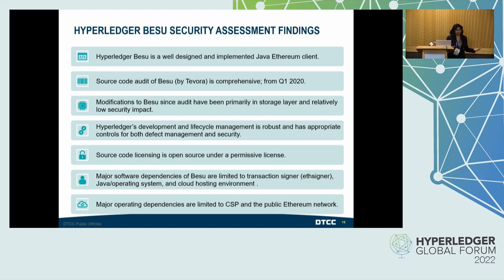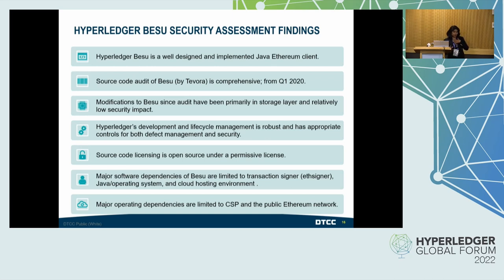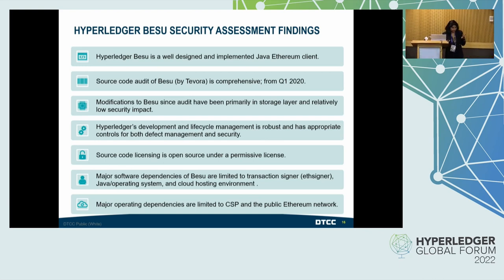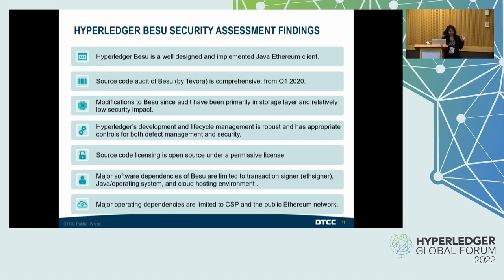Walking through the Hyperledger Besu security assessment findings: our initial assessment of known risks found Besu to be a well-defined and implemented Java client, which was good news. Prior to our assessment, Tevora — a third party — conducted a security audit on Besu and identified primarily two vulnerabilities. To my knowledge, both have been mitigated in iterative versions since. We found that Hyperledger Besu had a development and lifecycle management that was quite robust with appropriate defect management and security — which is why we were only able to quantify 3% of the risks toward secure configurations.